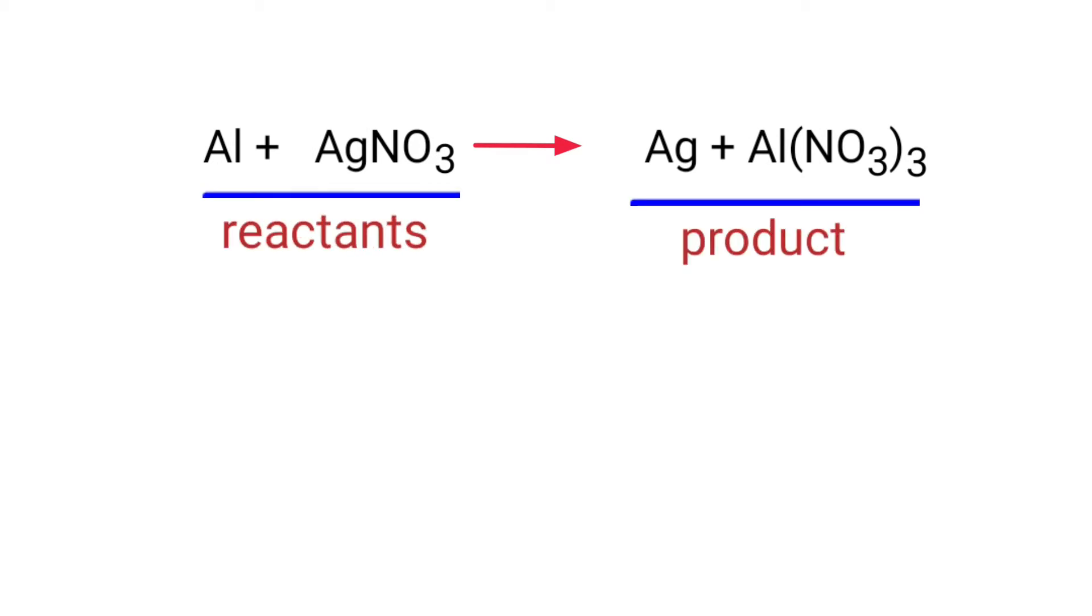In this equation, the reactants are aluminum and silver nitrate, and the products are silver and aluminum nitrate.